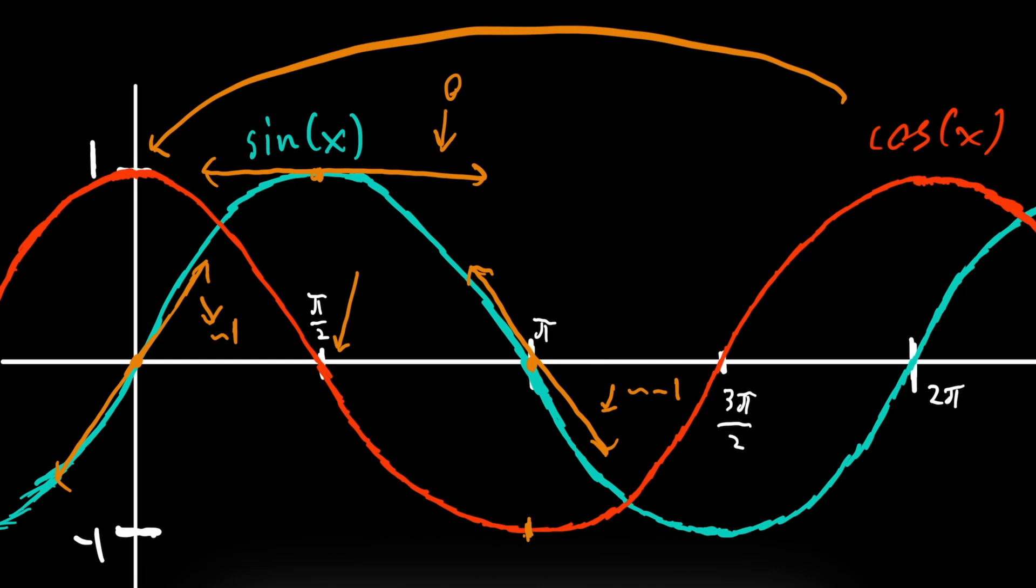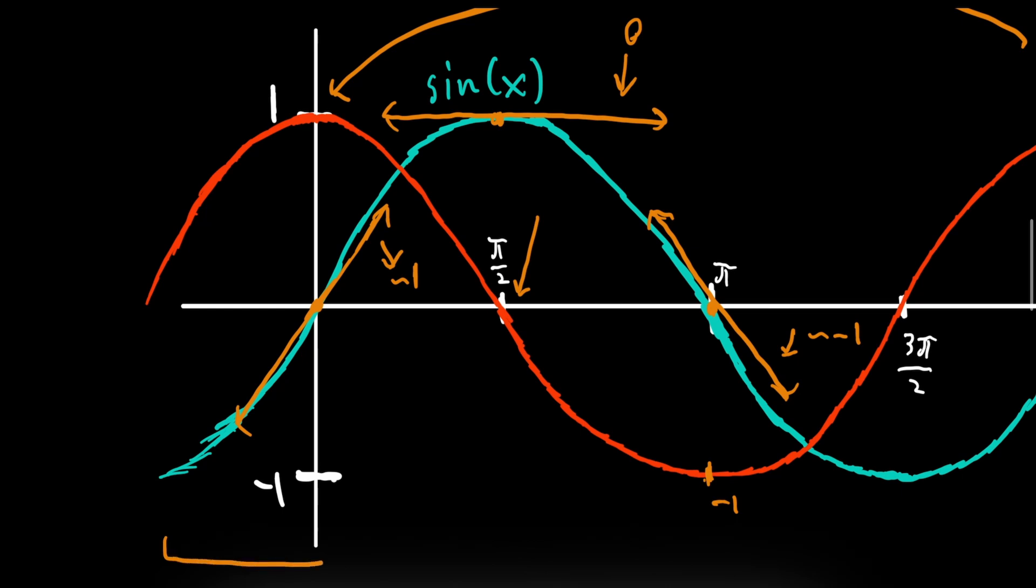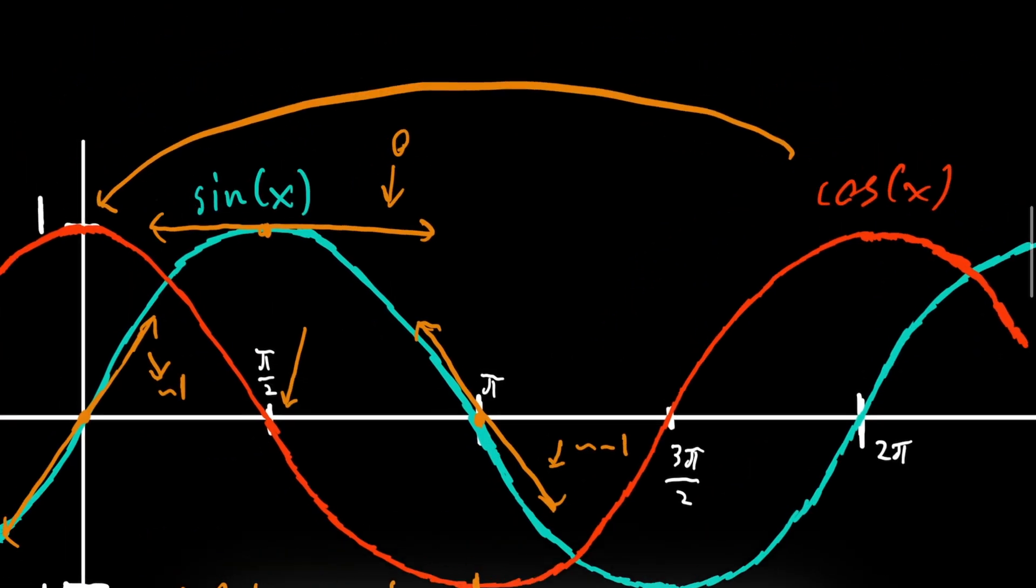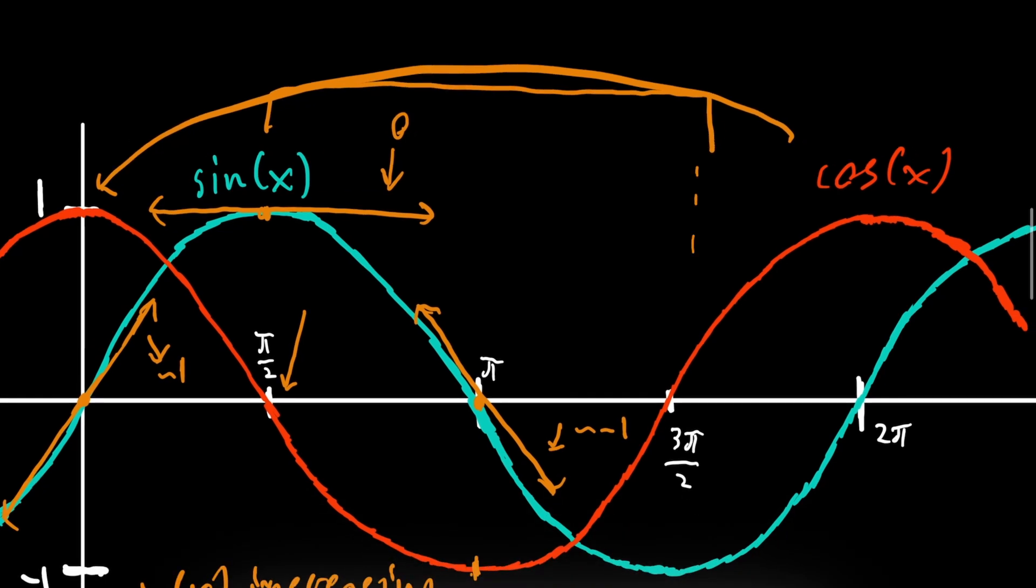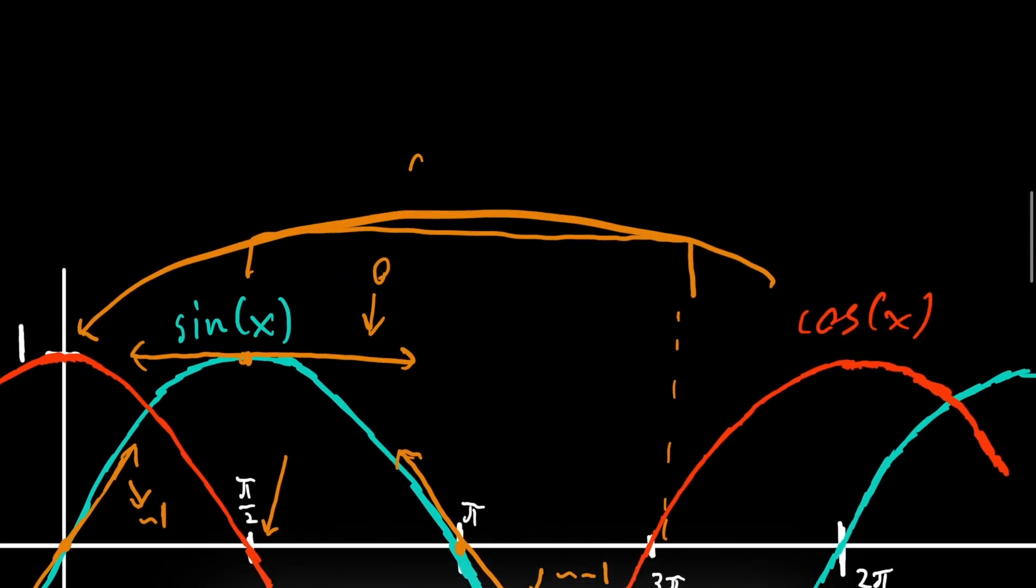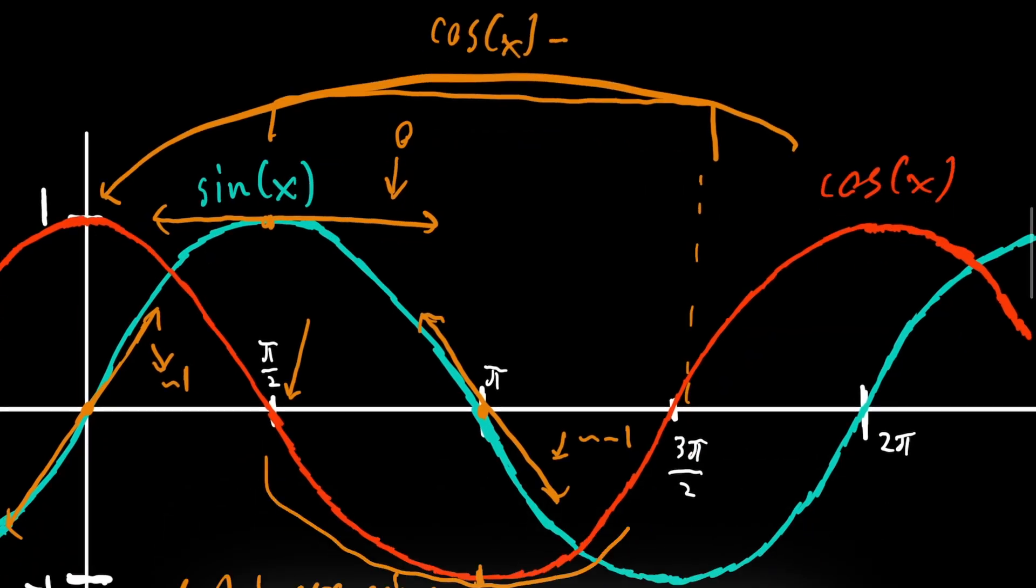For intervals where sine of x is increasing, cosine of x will be positive. And for intervals where sine of x is decreasing, maybe here perchance, intervals where sine of x is decreasing from pi over two to three pi over two, cosine of x will be negative, as you can see right here.